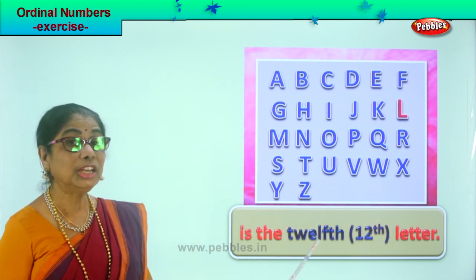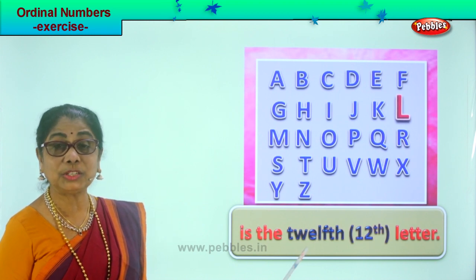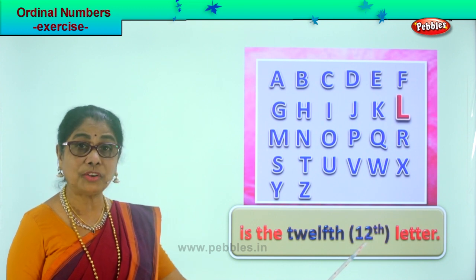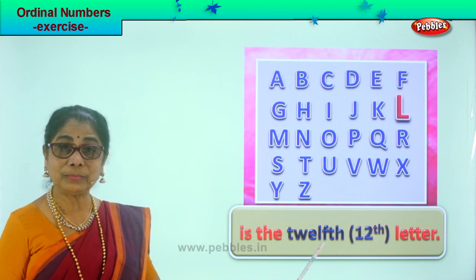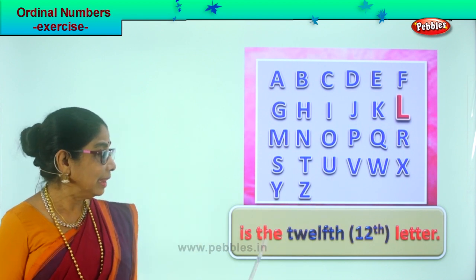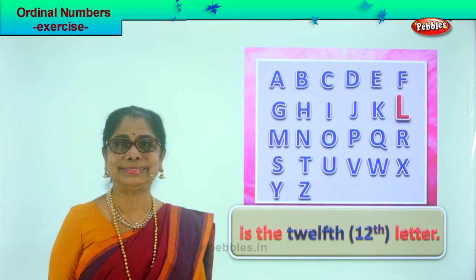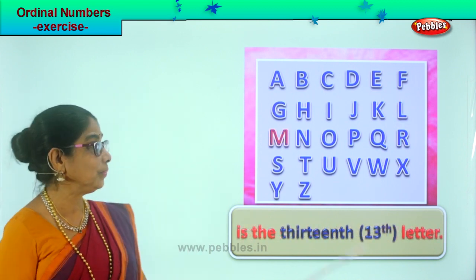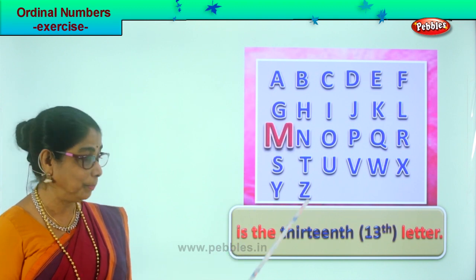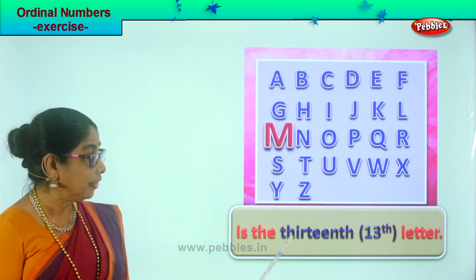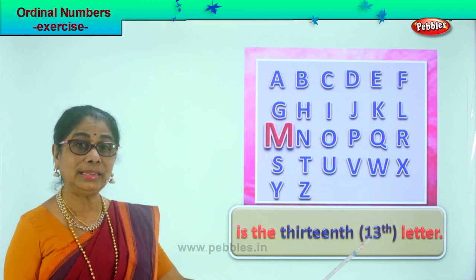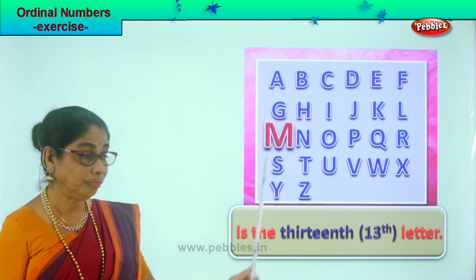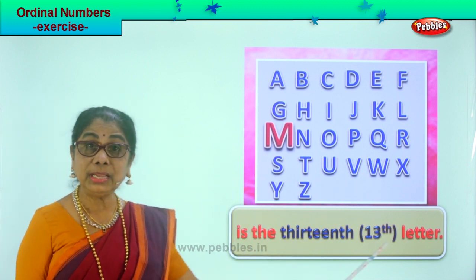L is the twelfth letter. Look at the spelling: 'twelfth.' You write twelve and TH — that's the short form. L is the twelfth letter. After L comes M. Letter M is the thirteenth letter. You write thirteen and TH. M is the thirteenth letter.